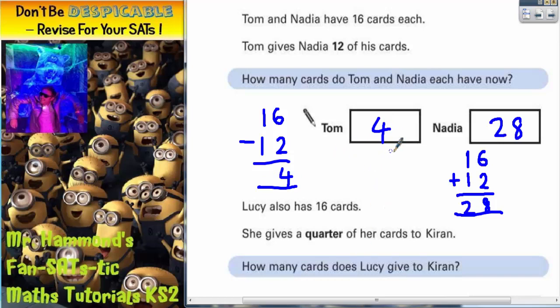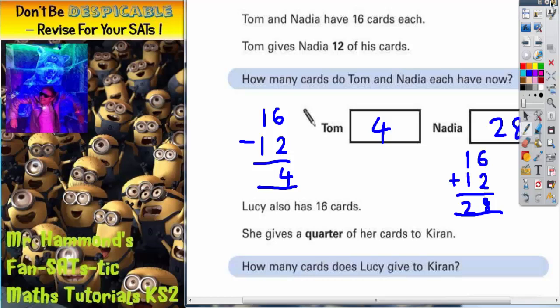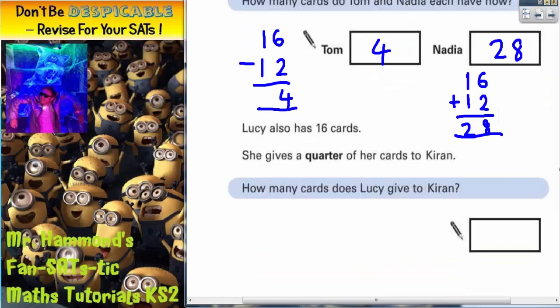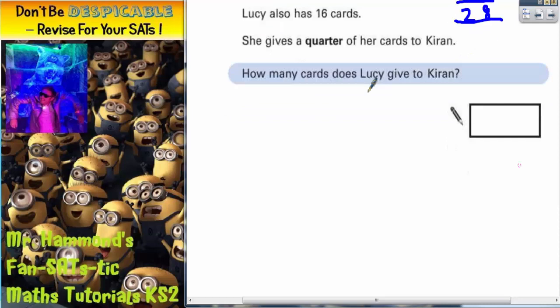So final answer, Tom has 4 cards, Nadia has 28 cards. If we get a different colour for the second part of the question. Lucy also has 16 cards. She gives a quarter of her cards to Kieran. How many cards does Lucy give to Kieran?